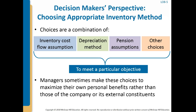Choosing among alternative accounting methods is a complex issue. Often, such choices are not made in isolation but in a way that the combination of inventory cost flow assumption, the depreciation method, pension assumption, and other choices meet a particular objective. Many believe managers sometimes make these choices to maximize their own personal benefits rather than those of the company or its external constituents. But regardless of the motive, the impact on reported numbers is an important consideration in each choice of method.